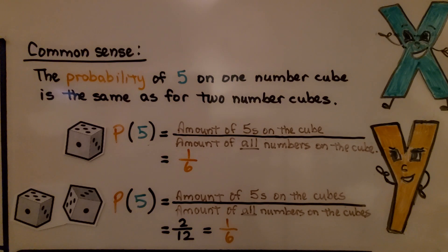So the probability of five on one number cube is the same. For two number cubes, or three, or four, it's still going to be a 1/6 chance, no matter how many six-sided number cubes we use.